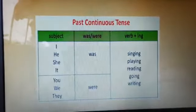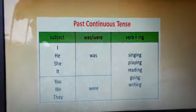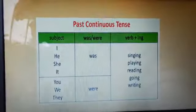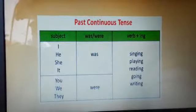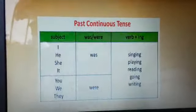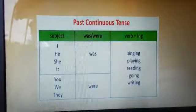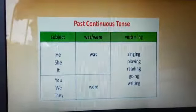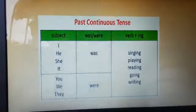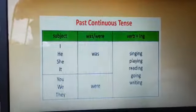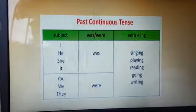Here, 'I' is an exception. It follows the rules which are followed with singular subjects. Means, with 'I' we will use 'was' as the helping verb, and with the base form of verb we will add '-ing'.